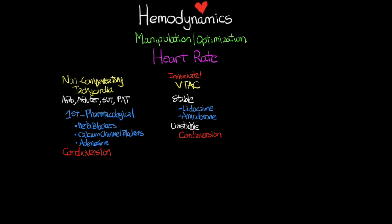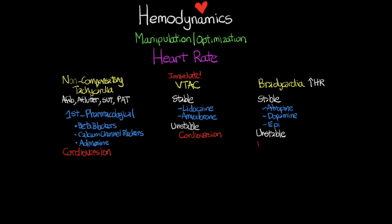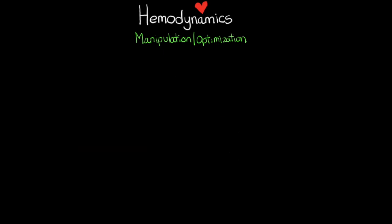The final situation in which we treat for heart rate is bradycardia. We simply want to increase their heart rate — if we have a stable patient we will try things like atropine, dopamine, or epinephrine. But if your patient is either unresponsive to those or they're unstable, then we will move to either transcutaneous or transvenous pacing and simply take over and control the heart rate for them. This is pretty simple stuff and honestly it's probably stuff that you've already done for your patients many times before.